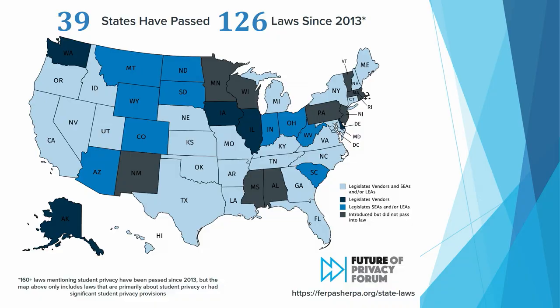In just the last five years, 39 states and DC have passed 126 laws specific to student privacy. We're reaching almost 1,000 laws that have been introduced over the past five years in all 50 states. In addition to those 126 laws, you also have probably another 60 to 70 that deal with student privacy in some way, but it's minor. This legal landscape is layered and complicated — it makes it nearly impossible for districts, companies, and others to know what they are supposed to do in order to be compliant.